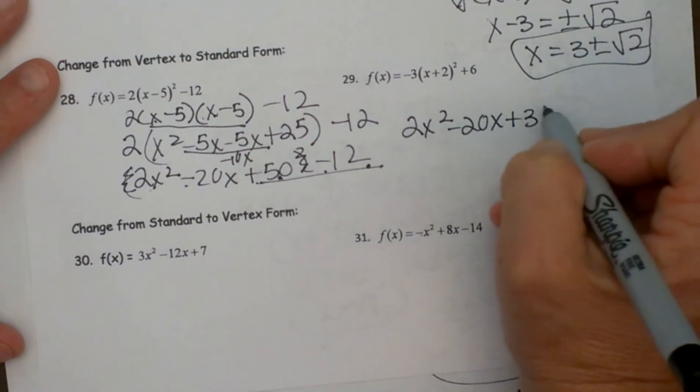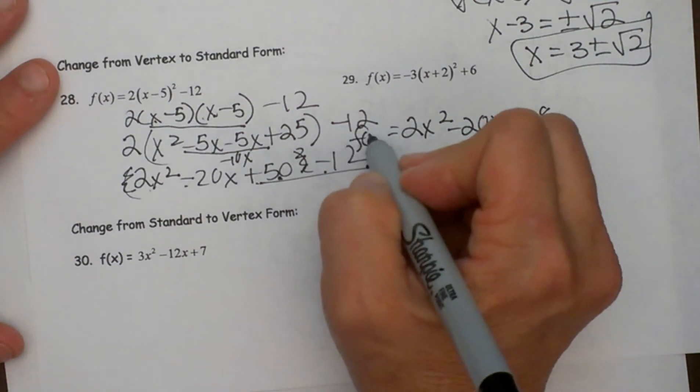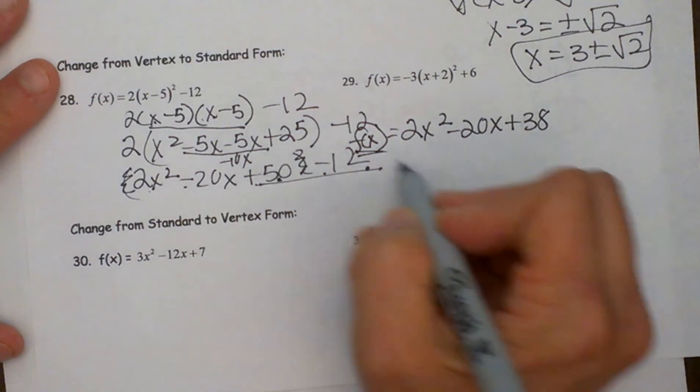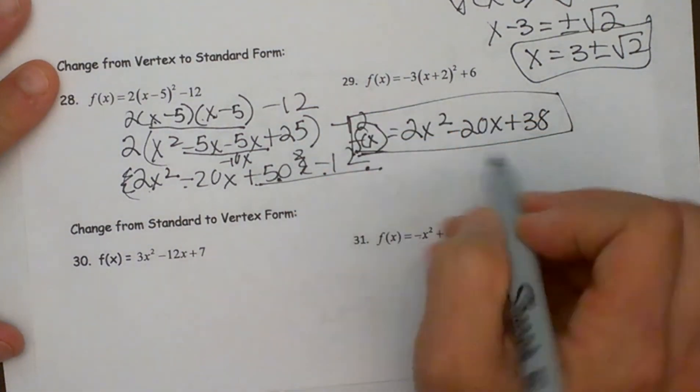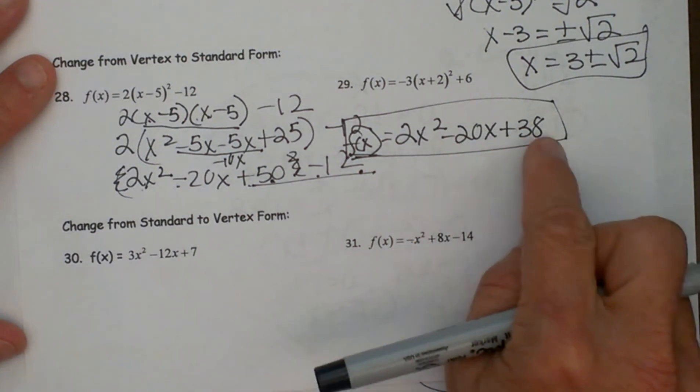And that is my quadratic and I need to write it as an equation. So let's put our f of x at the front. There is our quadratic in standard form. Standard form is ax squared plus bx plus c.